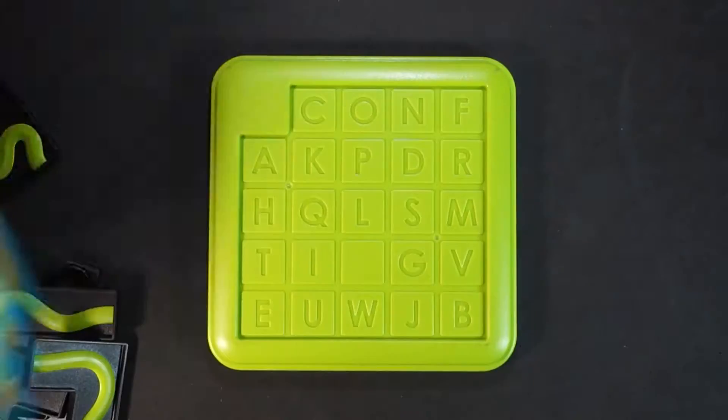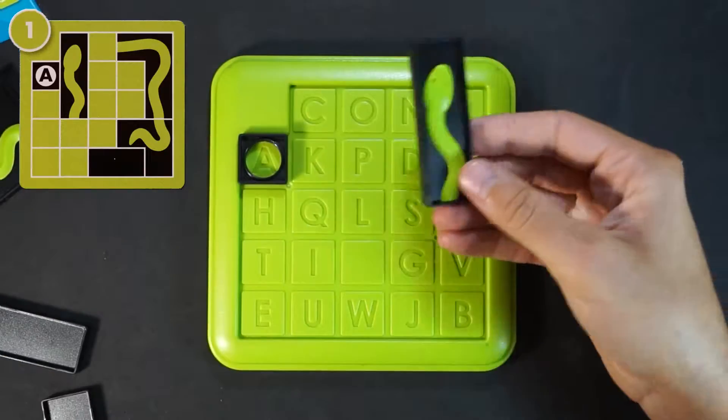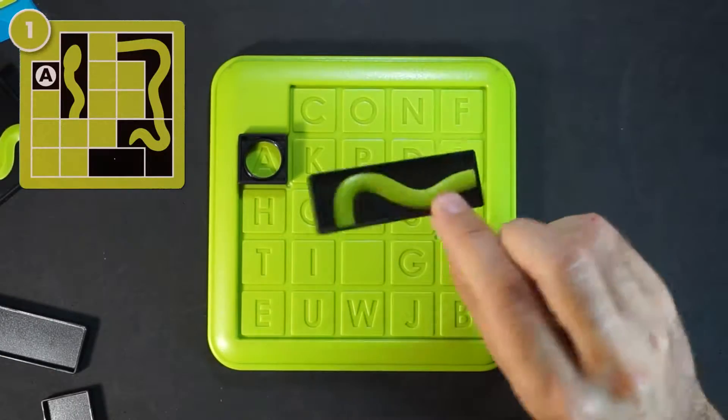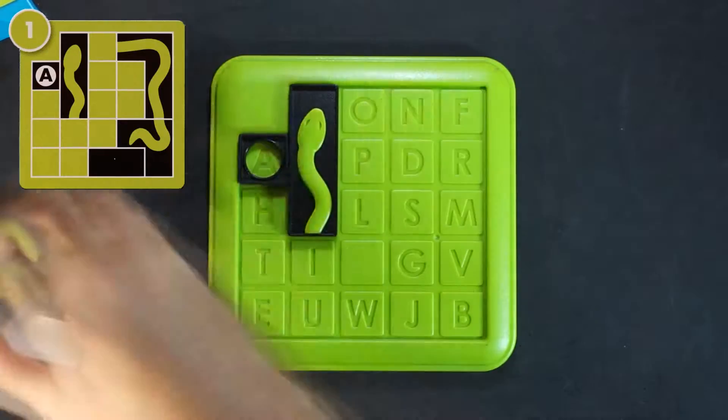Now copy the picture from the first challenge placing the pieces where it shows. All pieces have two sides so check carefully. Place them on top of the boxes with letters. These pop out just enough to lock the pieces in place.